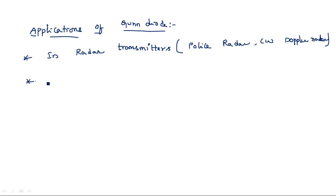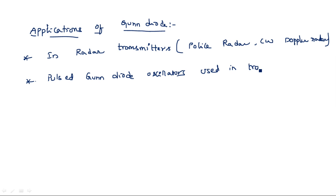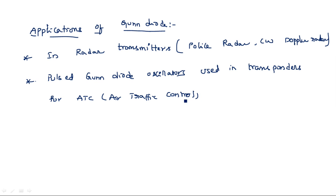The second application is pulsed Gunn diode oscillators, used in transponders for air traffic control (ATC) and in industrial telemetry systems.